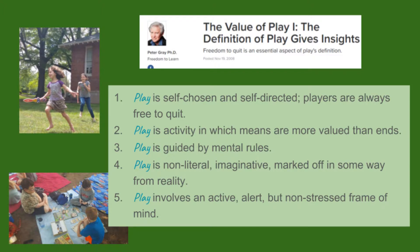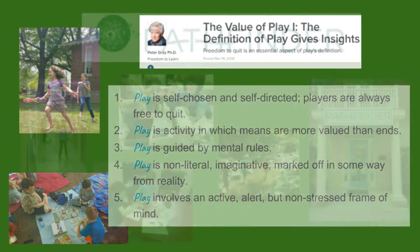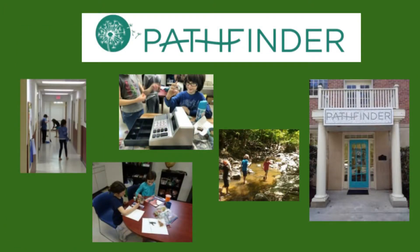Play is self-chosen and self-directed, but play is usually social — children are playing together. That means two or more children playing together all have to agree on what they're playing and how they're playing. If you've ever watched children play, you realize there's oftentimes more negotiation going on than there is actual play. And that's a good thing, because this is how children learn to negotiate, how they learn to get their needs met while also meeting the needs of others, how they learn to compromise.